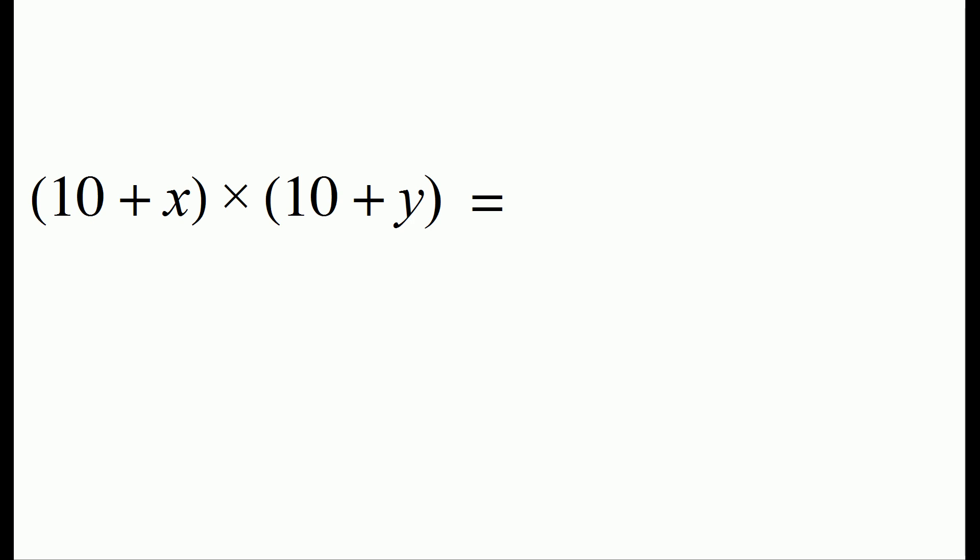The first step of the process was to take the entire number 10 plus x and add it to the digit y. So we have 10 plus x plus y. To that result, we added a digit 0, which is the same as multiplying by 10.